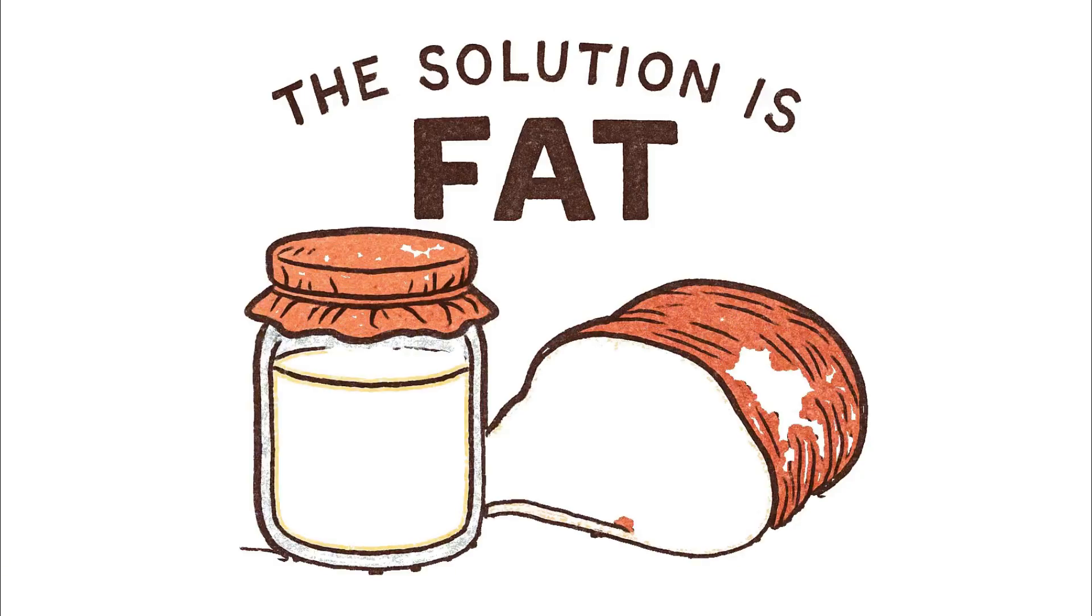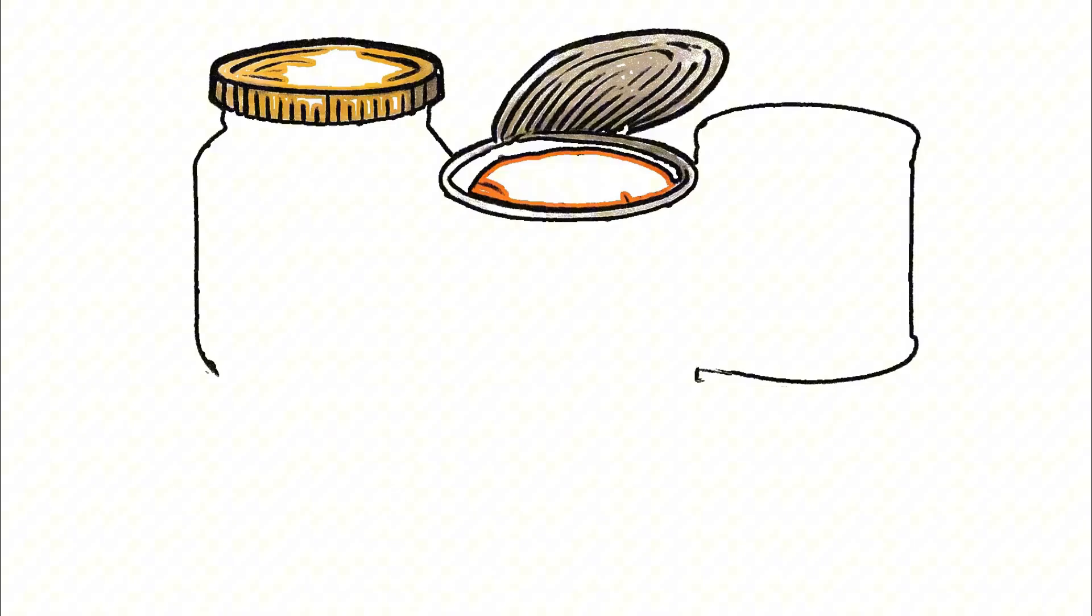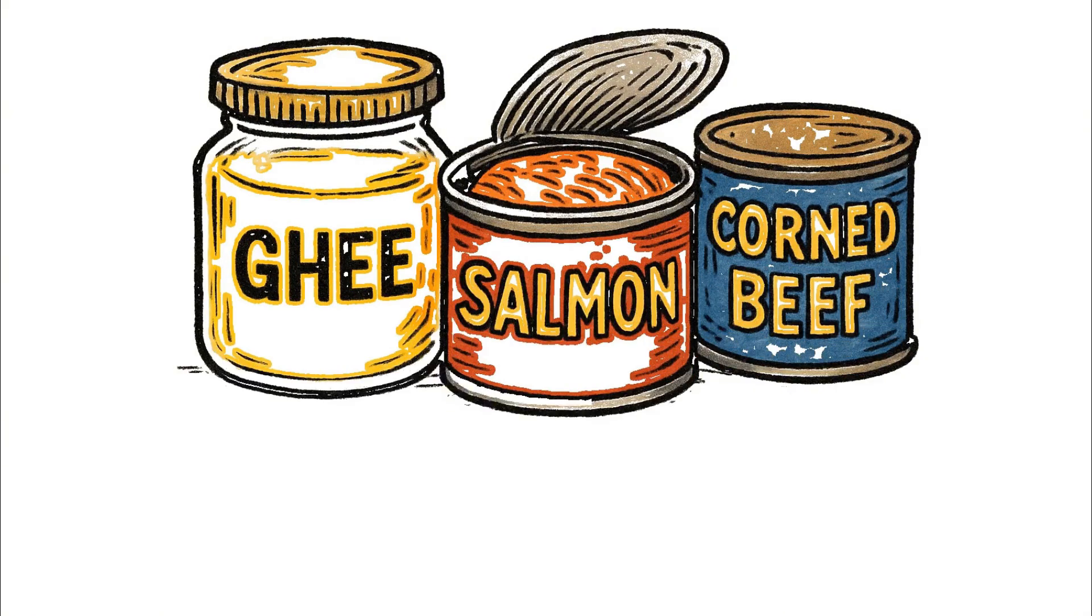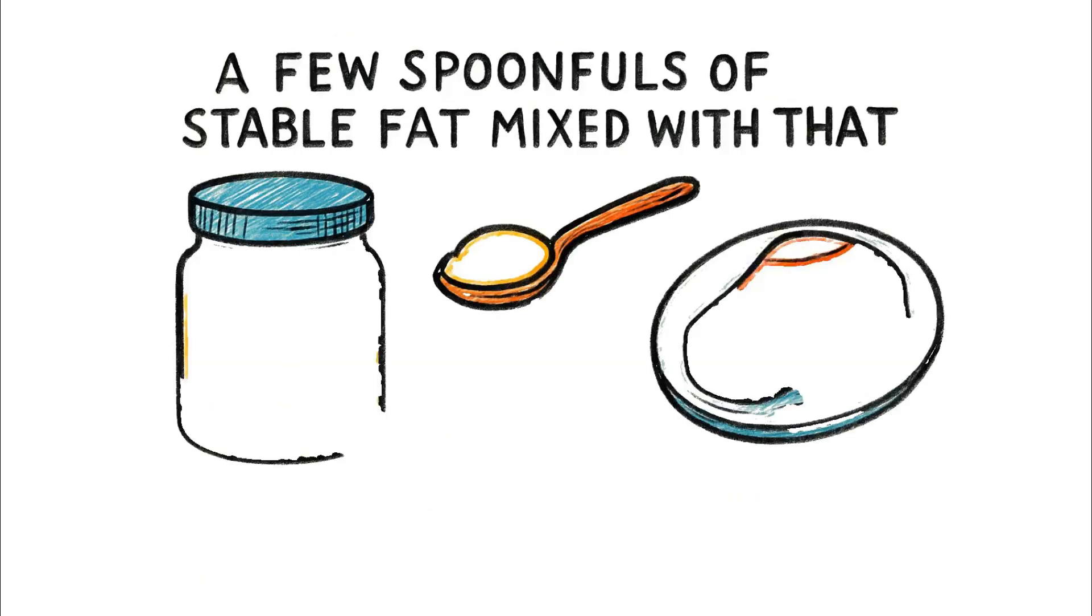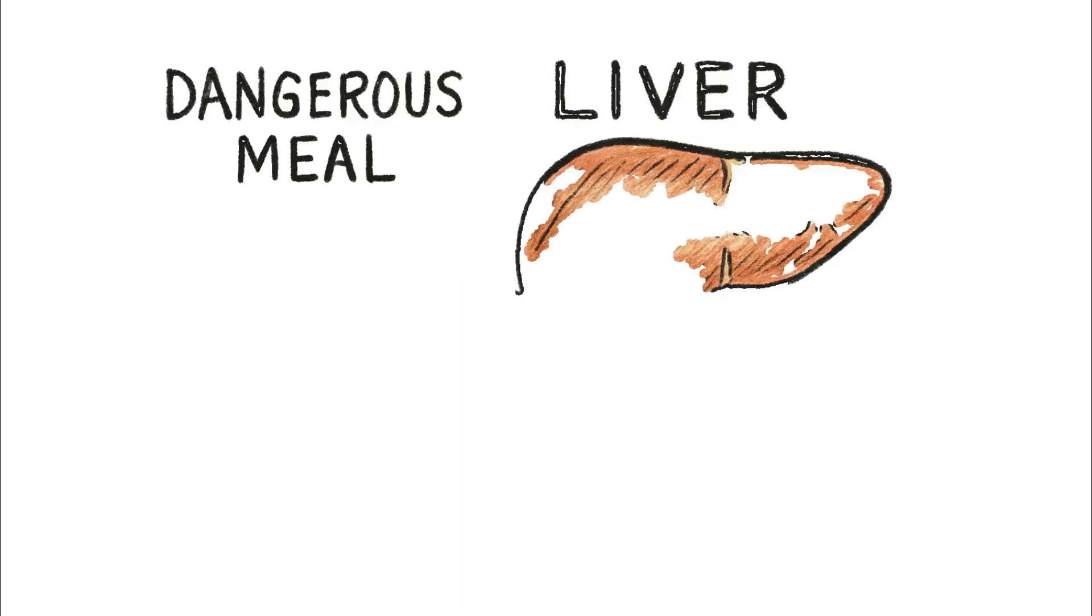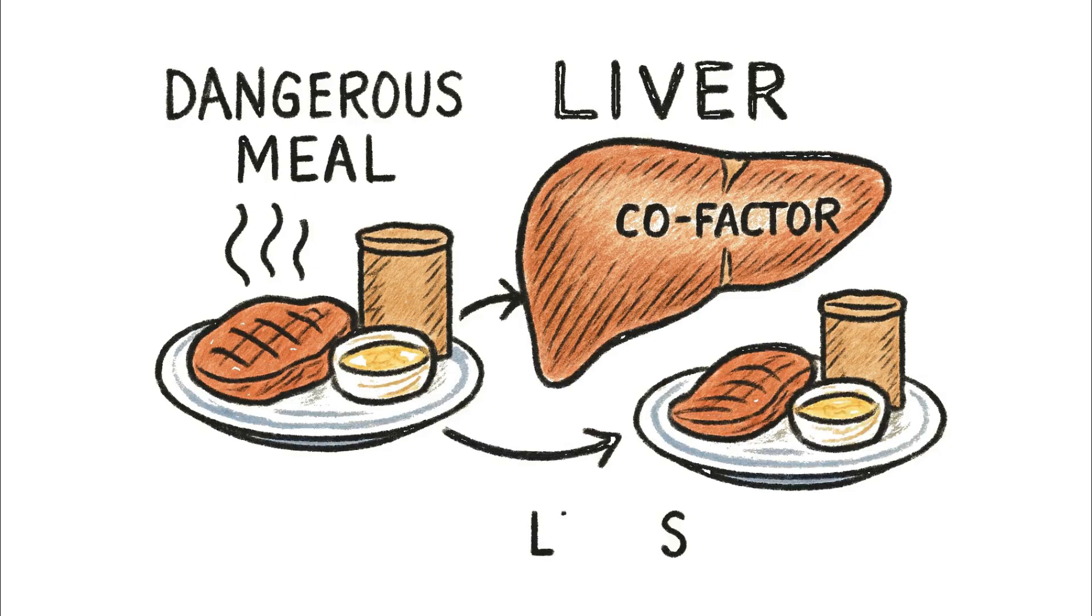The solution, understood by our ancestors for millennia, is fat. The antidote is storing pure, rendered fats like ghee or tallow, or stocking high-fat canned meats like salmon or corned beef. A few spoonfuls of stable fat mixed with that lean protein is all it takes to balance the equation. It gives the liver the cofactor it needs to do its job, turning a dangerous meal into a life-sustaining one.